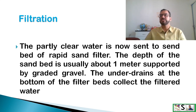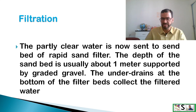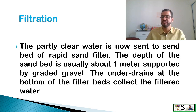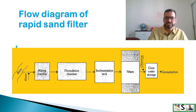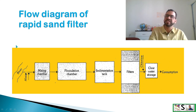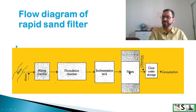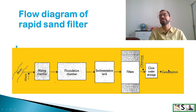The partially clear water is sent to the sand beds of the rapid sand filter. The depth of sand is usually 1 meter supported by graded gravel, with an under-drainage pipe system below to collect filtered water. In the flow diagram: water source → mixing chamber (alum added) → flocculation chamber → sedimentation tanks → filter bed → chlorine addition (disinfection) → clear water storage reservoir → distribution for consumption.